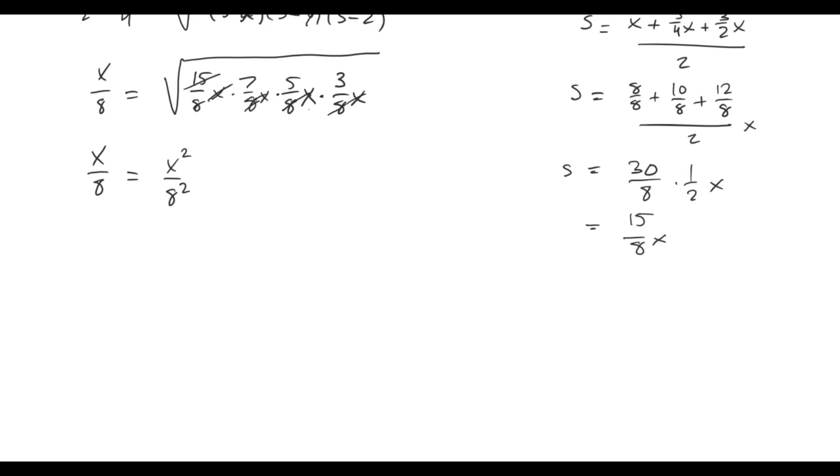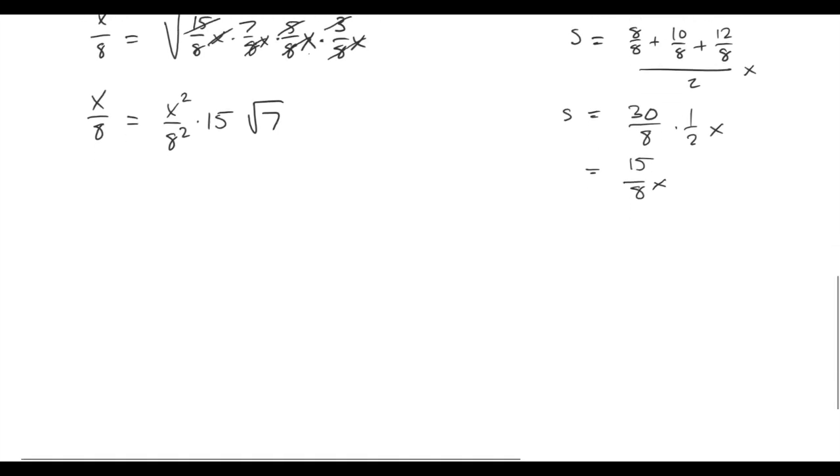And now we just solve for x. So we can bring 15 out of the radical and we're left with root seven. Cancel some eights. We're allowed to cancel x because x equals zero is a degenerate case. And now bring everything to the other side: x is eight over fifteen root seven.